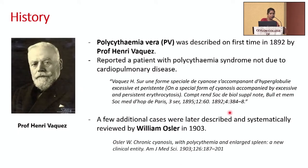Before I move on, I'd like to start with the history of how polycythemia and erythrocytosis came about. Professor Henri Vaquez was the French physician who first described polycythemia vera in 1892, where he described a patient with a polycythemia syndrome not due to cardiopulmonary disease — which, as we know, can be associated with erythrocytosis — but here he found something unusual. That was the initial reported case in the literature.